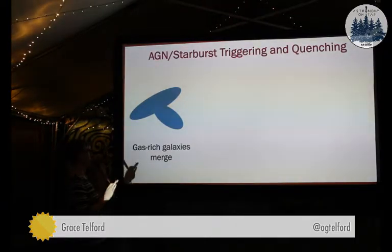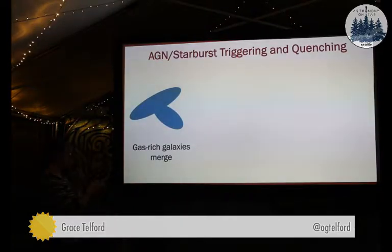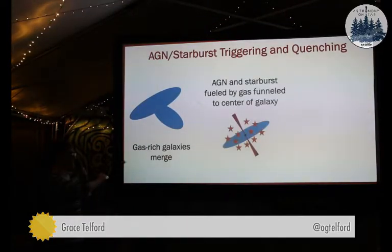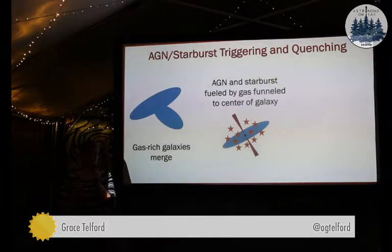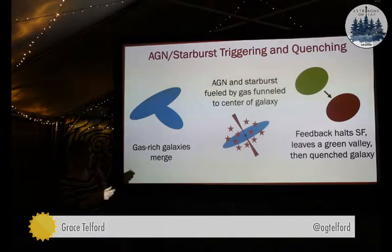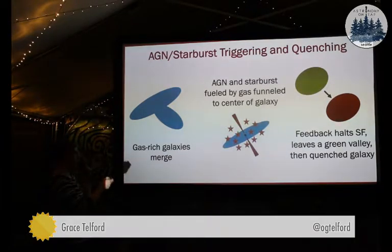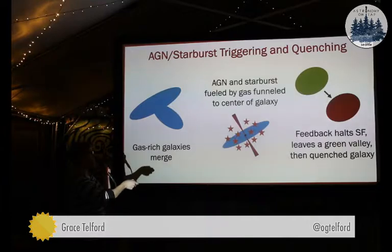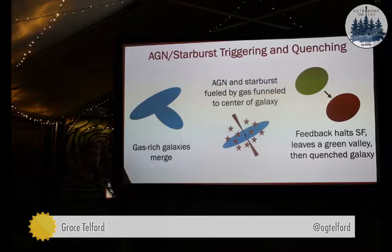This is the general story that ties together active galactic nuclei, starburst galaxies, and quenching all in one neat picture. For at least some kinds of galaxies, this is probably what's going on: we have a merger between two normal star-forming gas-rich galaxies. This merger basically causes gas to funnel to the center of the galaxy, feed the black hole, and simultaneously feed star formation. All of this produces a lot of feedback, which essentially makes the gas no longer available for star formation, causes the galaxy to quench, and then you're left with your transition Green Valley galaxy, and then eventually a quenched elliptical galaxy.